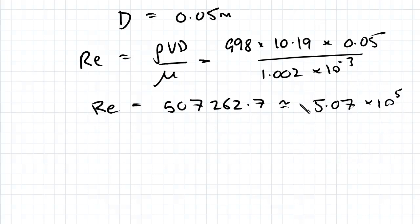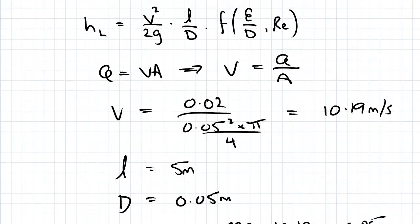It always is easier to revert back to scientific notation because the Moody diagram has the bottom axis which is Reynolds number in terms of scientific notation. That's why I've done that, and we need to find the friction factor in our equation.